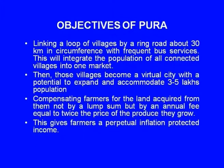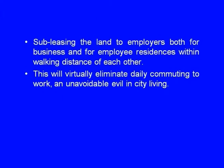The objectives of PURA can be enumerated as: linking a loop of villages by a ring road about 30 kilometers in circumference with frequent bus services; integrating the population of all connected villages into one market so those villages become virtual cities with the potential to accommodate 3 to 5 lakhs of population; compensating farmers for acquired land not by a lump sum, but by an annual fee equal to twice the price of the produce they grow, giving them a perpetual inflation-protected income; and leasing land to employers for both business and employee residences within walking distance.